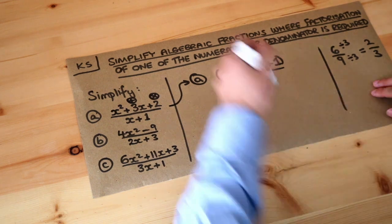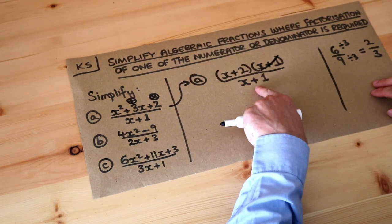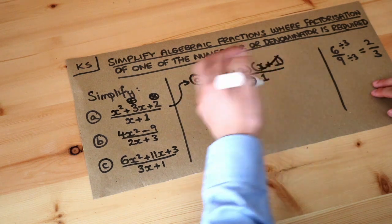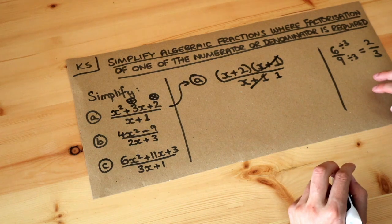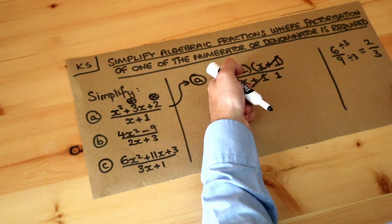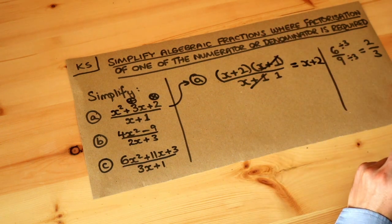So we could divide the top by x plus 1, just get rid of it, and we could divide the bottom by x plus 1. Well, x plus 1 divided by x plus 1 is just 1, anything divided by itself is 1. And now we've just got x plus 2 over 1, which is just basically x plus 2 because anything divided by 1 is itself.